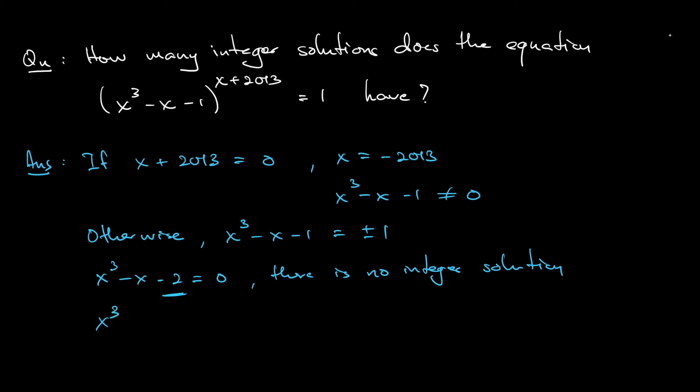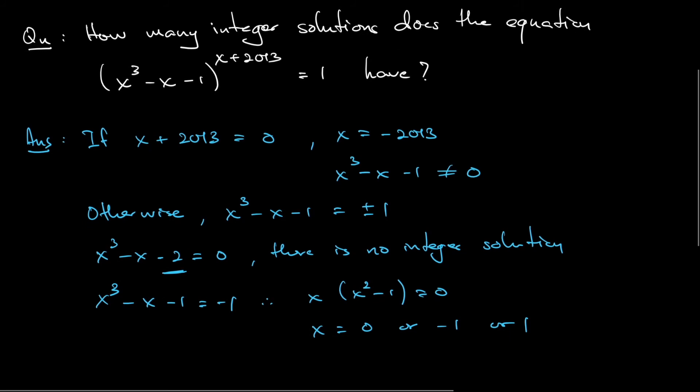So the next thing is x cubed minus x minus 1 equals minus 1. You can factor out x. x times x squared minus 1 equals 0. So that means x is 0 or plus 1 or minus 1.